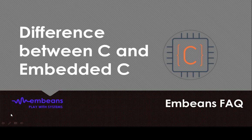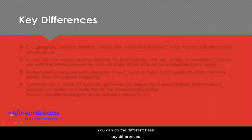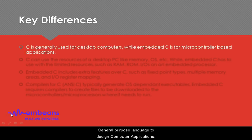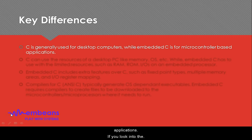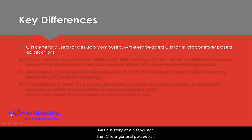If we look into the different basic key differences: C is basically a general purpose language to design desktop computer applications, while embedded C is used for microcontroller based applications.